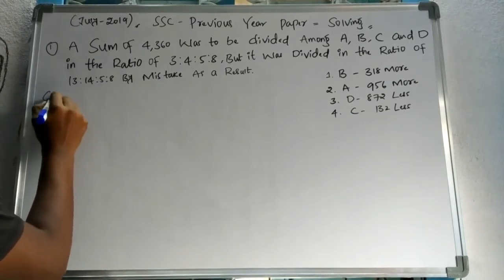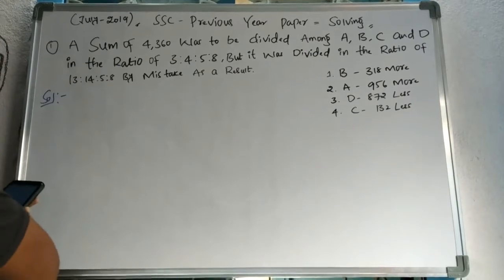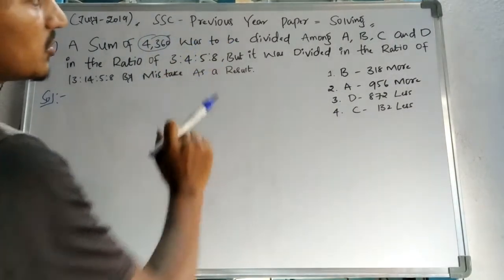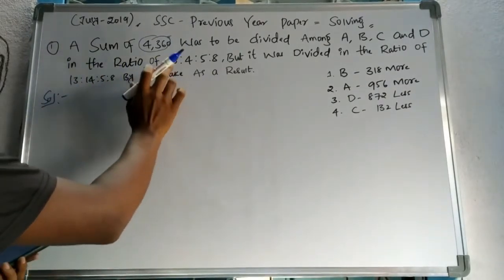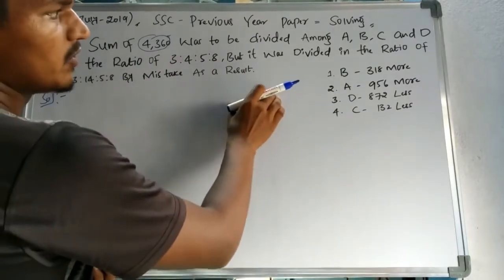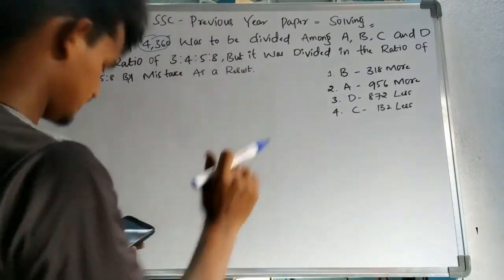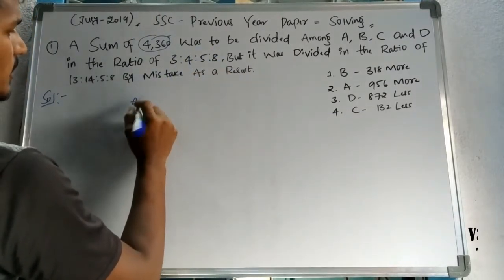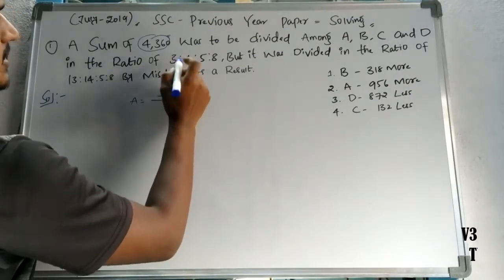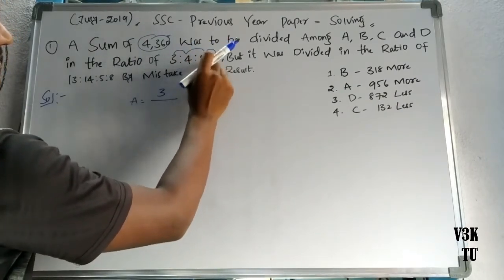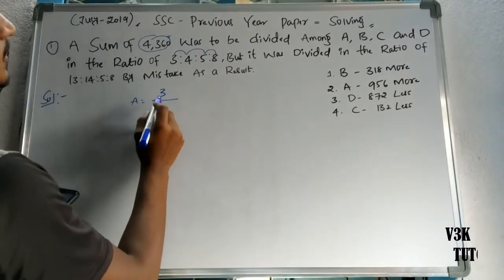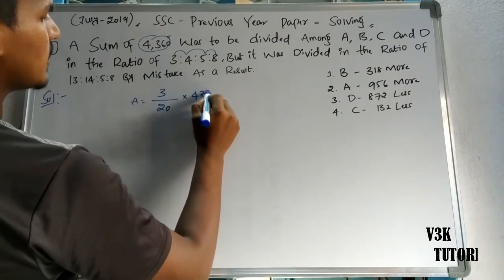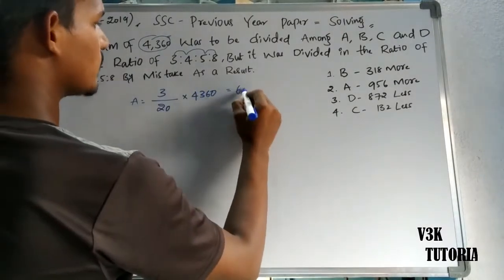Here's our solution. We have 4,360 and the correct ratio is 3:4:5:8. As a shortcut, we assume 3:4:5:8. The individual amounts are found by dividing each part by the sum of all parts. 3 plus 4 plus 5 plus 8 equals 20. So A's amount is 3 by 20 into 4,360, which equals 654.